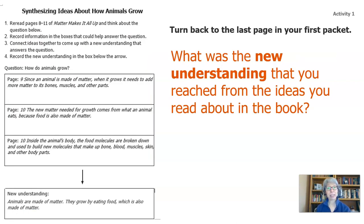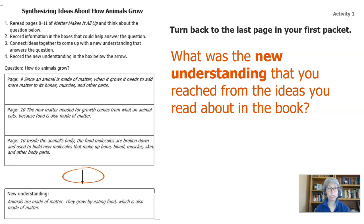So if you have that last packet, go back to that last page. If you don't, you can just follow along. What was the new understanding that you reached from the ideas in the book? Some of you said: animals are made of matter. They grow by eating food, which is also made of matter. Feel free to pause the video and review this packet sheet and join us when you're ready.